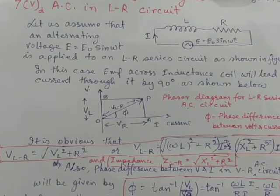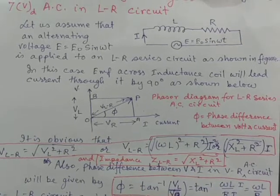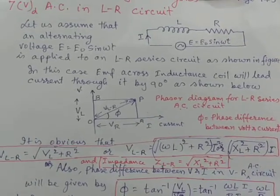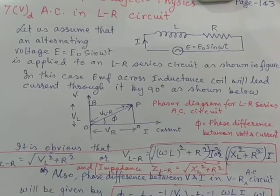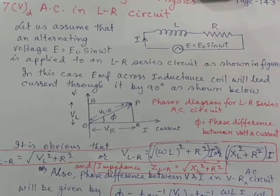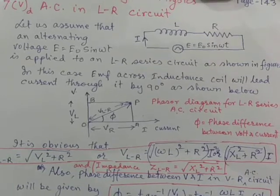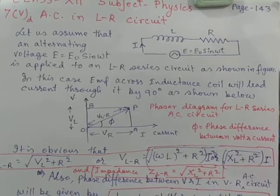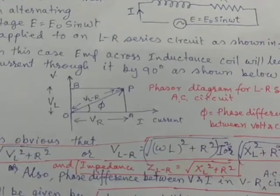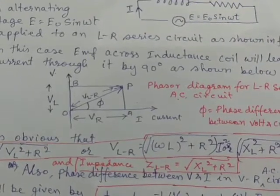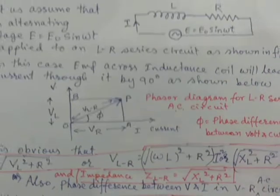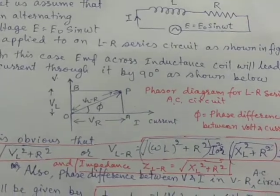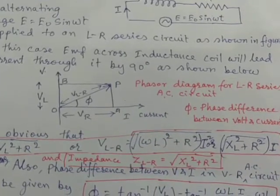we see from the diagram shown here that the phasor diagram for LR circuit is having voltage across resistance along x-axis, and voltage along inductance along positive y-axis. And as a result, the phase difference between the voltage across LR circuit and the current is given by phi equal to VL by VR.